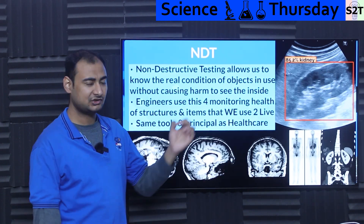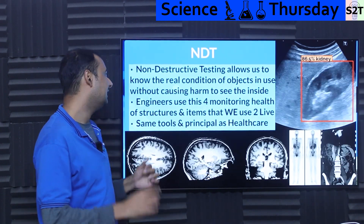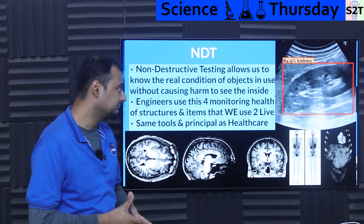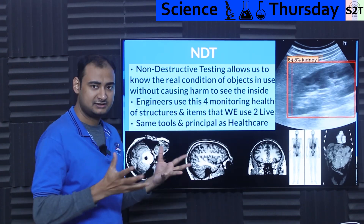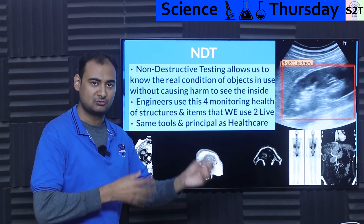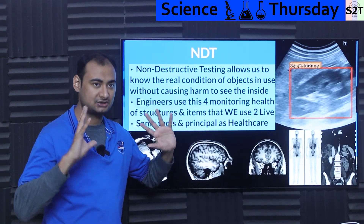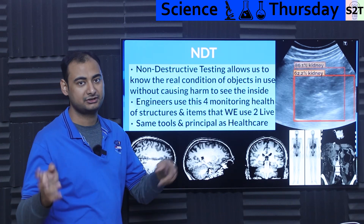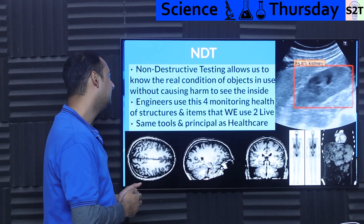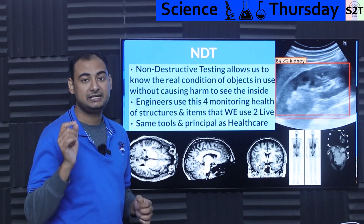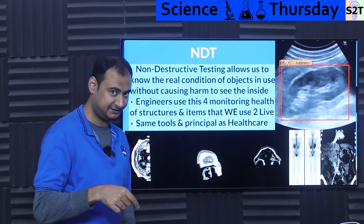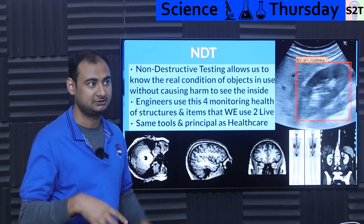NDT — non-destructive testing — allows us to know the real condition of objects. It doesn't matter if it's a small object or a big object, whatever your point of interest is, without causing any harm. And you can see inside — let that be very clear.